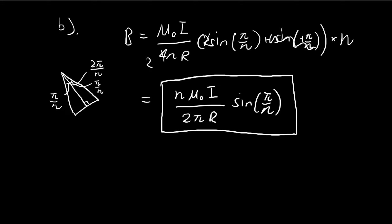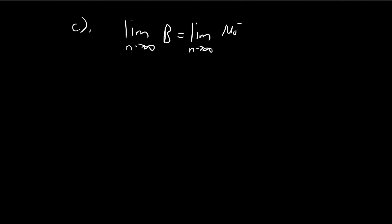For part C, we need to consider the case when n tends to infinity. In order to solve this limit, I'm going to invoke this result: lim(x→0) sin(x)/x equals 1. This is a famous limit that you've probably learned in calculus class. I'm not going to prove this here, just accept this and take it for granted for this video.